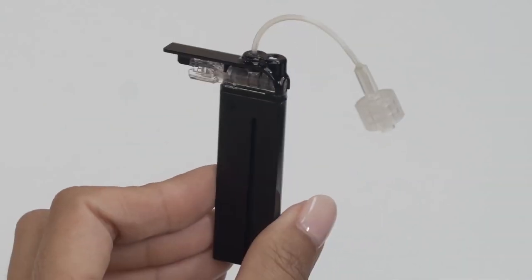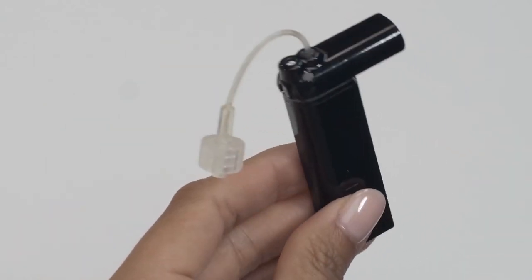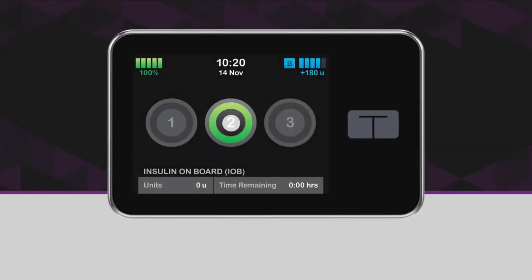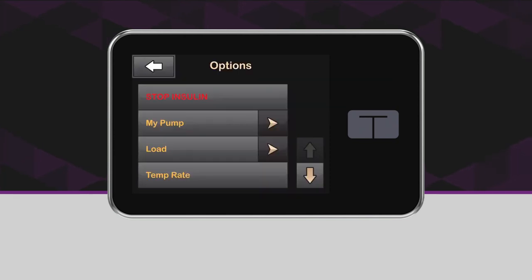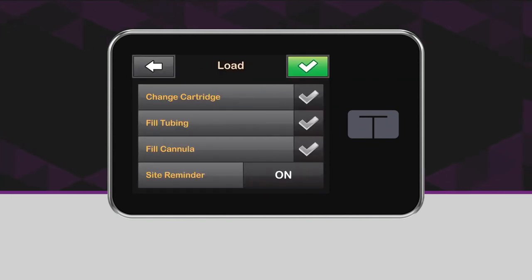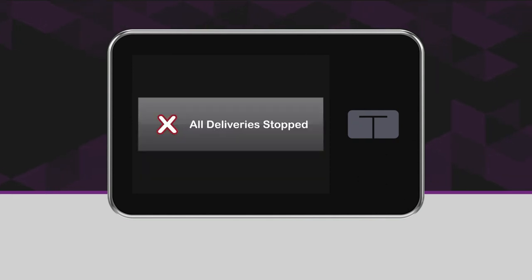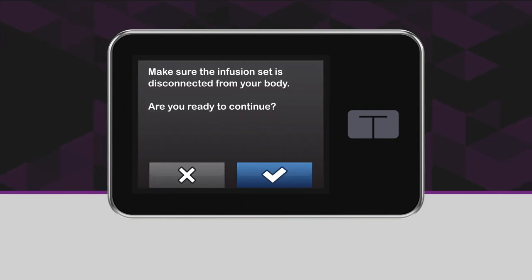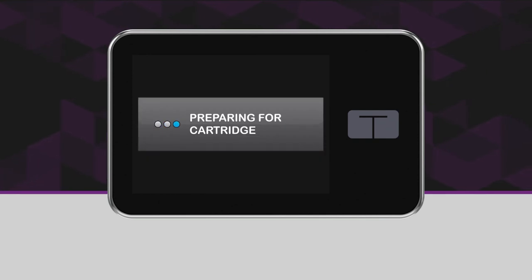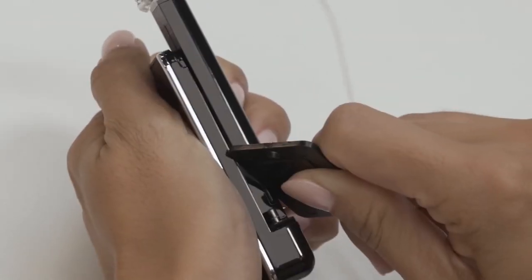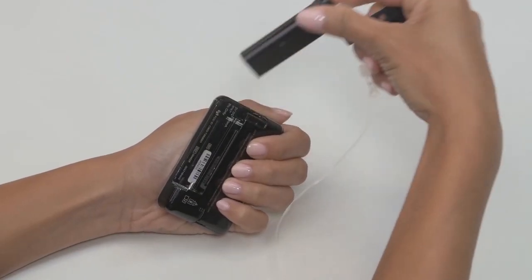If everything looks good and there are no leaks, you've successfully filled your cartridge and are ready to install it onto your pump. Now turn on and unlock your pump, and from the home screen tap Options, then tap Load. Next, tap Change Cartridge. The pump will tell you that all deliveries will be stopped, which is fine since you don't want to be trying to pump while you're changing your cartridge. So tap the checkmark to continue. Next, you'll be prompted to disconnect your infusion set from your body. Tap the checkmark to continue. You should see the Preparing for Cartridge screen.